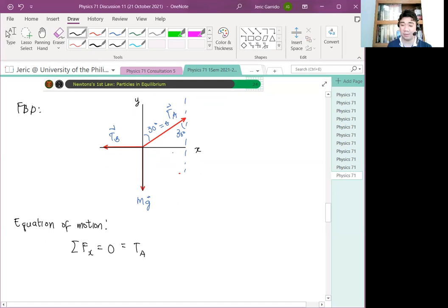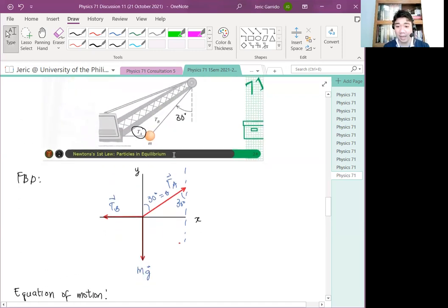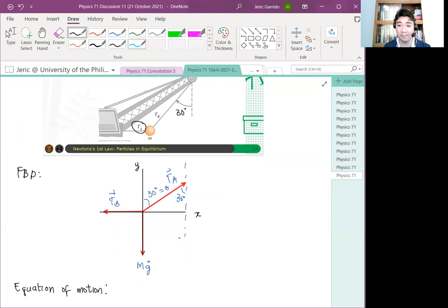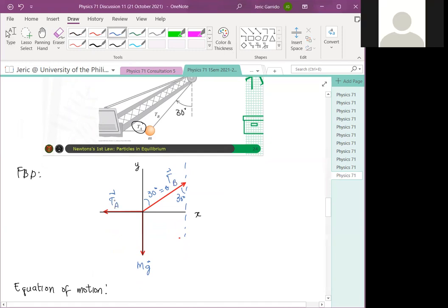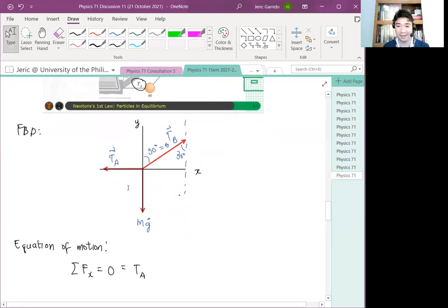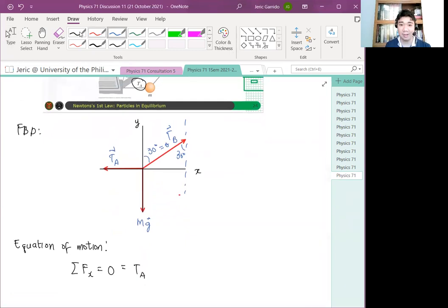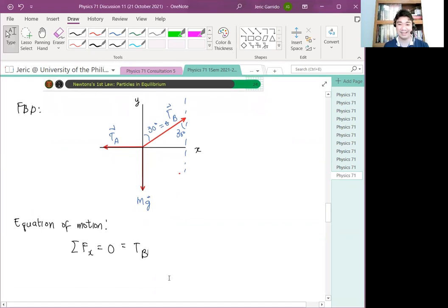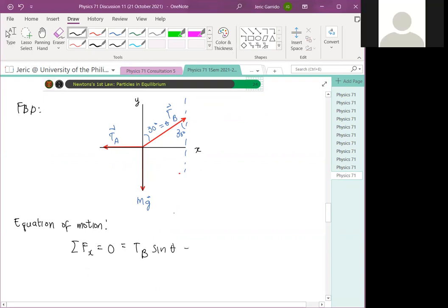TA minus TB cosine. Wait, TB? Is it reversed? Wait. Ay, sorry. I made a mistake. Sorry for that. I mislabeled them. This should be TB and this should be TA. Sorry for that. Okay, again. So, this should be TB times cosine or sine? Sine. Because your theta is with respect to the y-axis, not with respect to the x. Therefore, this should be TB sine theta minus TA. Okay?